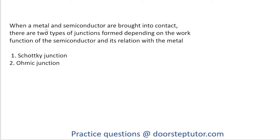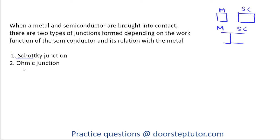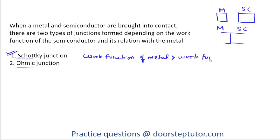Whenever metal and semiconductors are brought into contact — suppose we have some metals and some semiconductor materials — whenever these two materials are brought together, they form a kind of device. Depending upon the work function of the metal and semiconductor, two different types of contacts are formed: the Schottky Junction and the Ohmic Junction. In the case of the Schottky Diode, the Schottky Junction is formed.